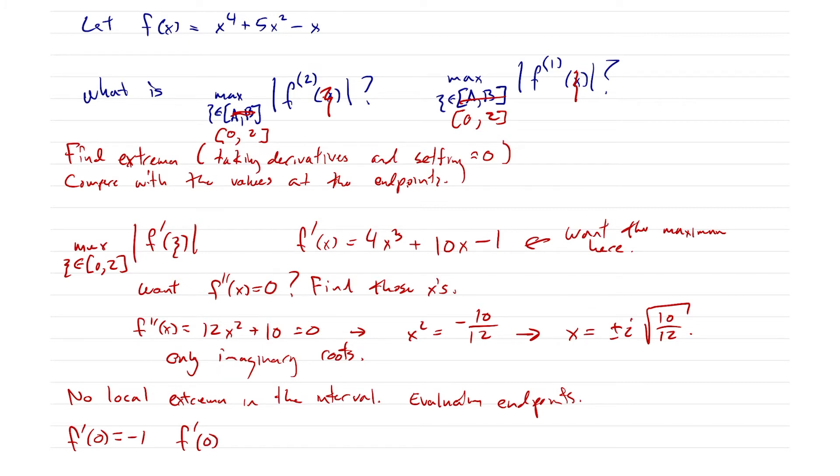And so we can even just say the maximum value is going to be at the right endpoint, just because I mean, it's always an increasing function, but even without that knowledge, we see that F prime at zero is going to be negative one and F prime at two, it's going to be four times eight, that's 16 plus 20 minus one. And so that is what? 35. So the maximum for C in zero to two of F prime of C is equal to 35. We would also compare with the opposite value of negative one, but 35 is way bigger.